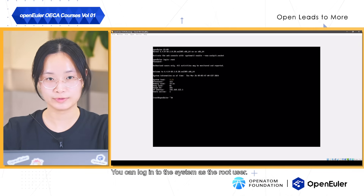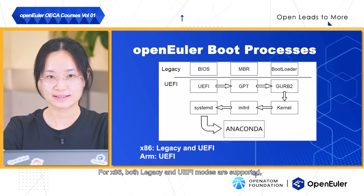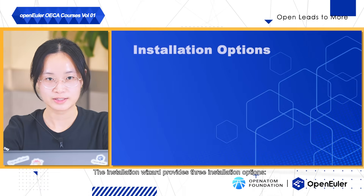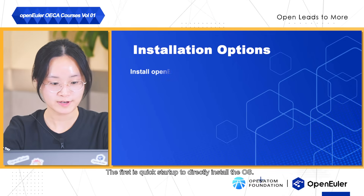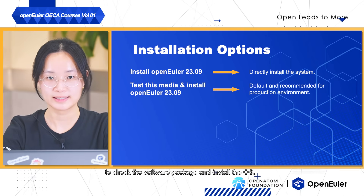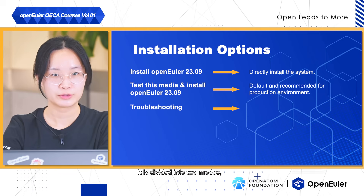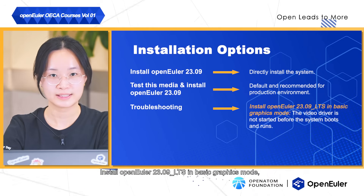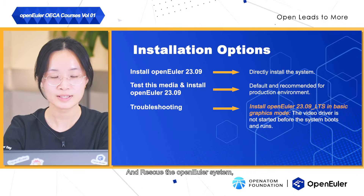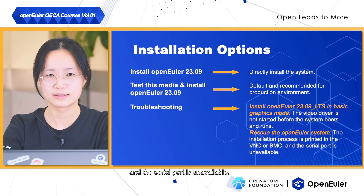You can log into the system as the root user. OpenEuler supports two architectures and as such, two supported boot modes. For x86, both legacy and UEFI modes are supported. While for ARM, only the UEFI mode is supported. The Installation Wizard provides three installation options. The first is Quick Startup to directly install the OS. The second and default method is to check the software package and install the OS — this option is recommended for the production environment. The third is Troubleshooting, divided into two modes: install OpenEuler 2309 LTS in basic graphics mode, where the video driver is not started before the system boots and runs, and rescue the OpenEuler system, where the installation process is printed in the VNC or BMC and the serial port is unavailable.